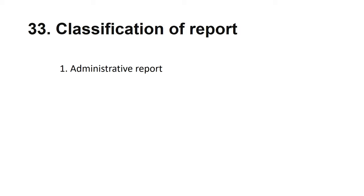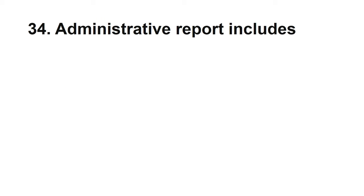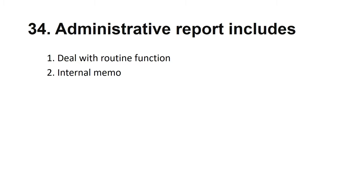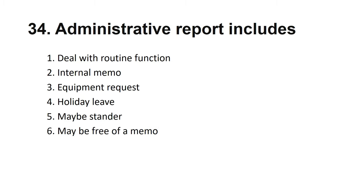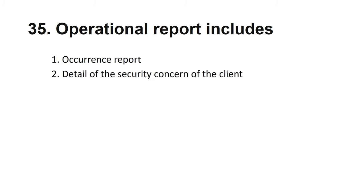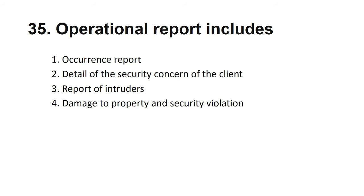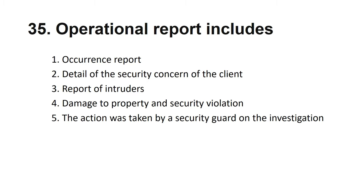Classification of reports — there are two types: administrative report and operational report. Administrative reports deal with routine functions such as internal memos, equipment requests, holiday leave information, and standard memos. Operational reports include occurrence reports for incidents, details of security concerns of the client, reports of intruders, damage to property, security violations, and actions taken by the security guard during an investigation.